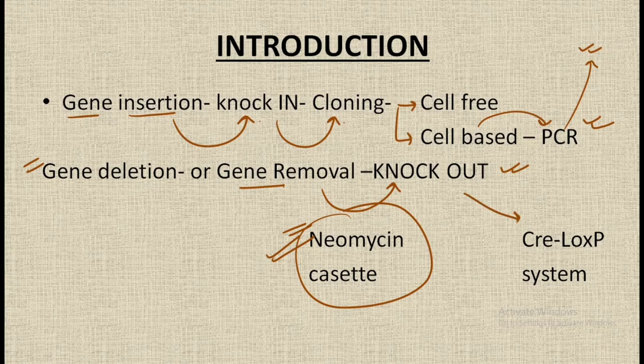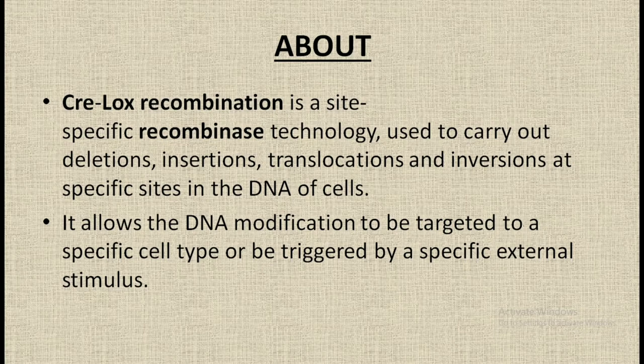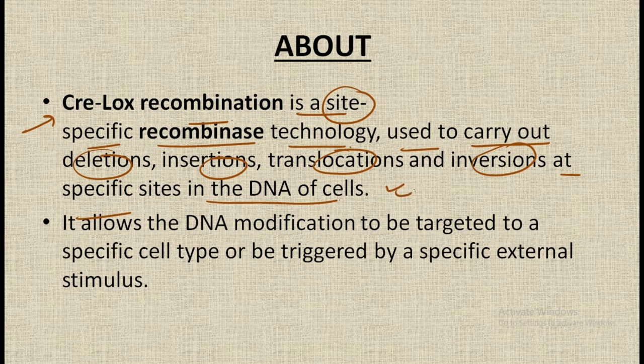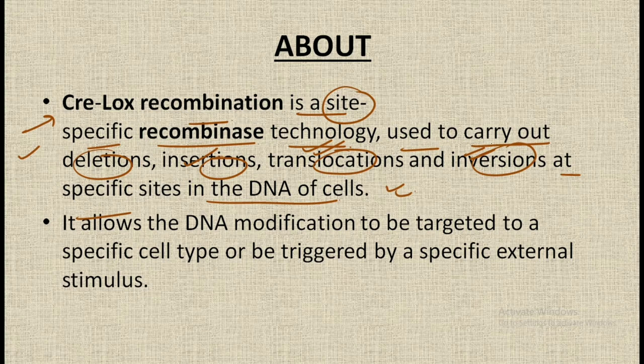In this lecture we will focus upon the second aspect of gene knockout, that is the Cre-loxP system. Cre-loxP recombination is a site-specific recombinase technology that is used to carry out deletions, insertions, translocations, and inversions at specific sites in the DNA of the cell. In simple words, we are either deleting, inserting, translocating, or inverting DNA at specific sites of the cell.